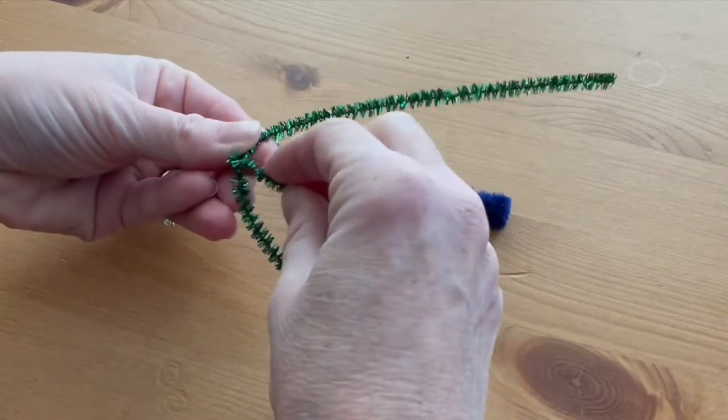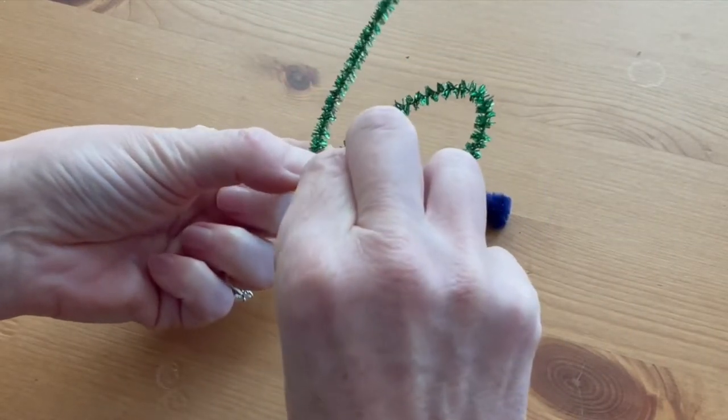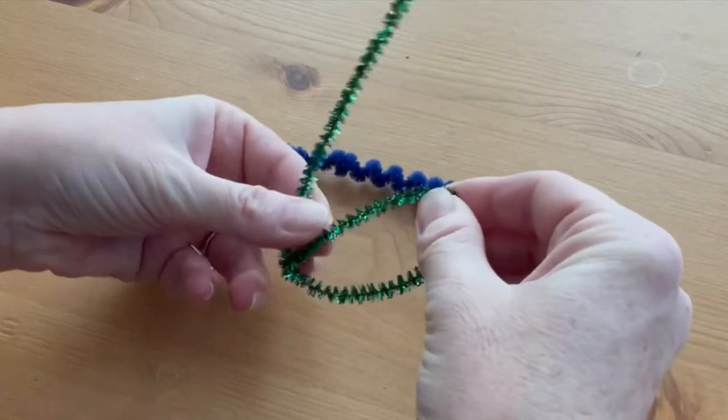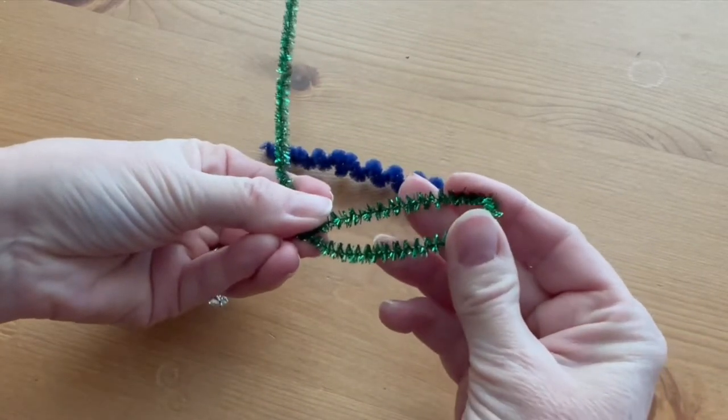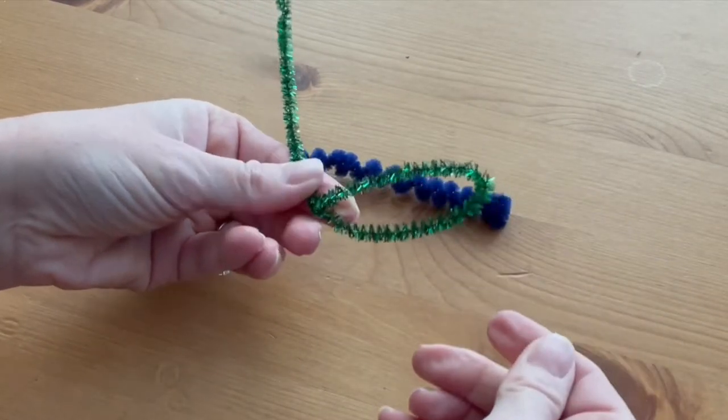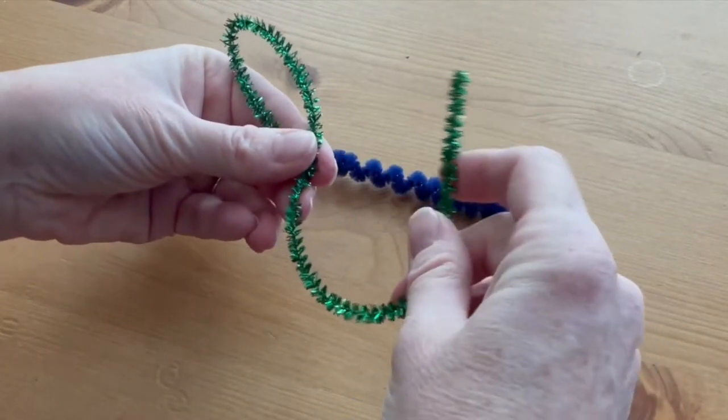Take the very end and wrap it around the middle there to keep it in place, and then shape the wing into a long skinny dragonfly wing. With the other side, do the same thing.